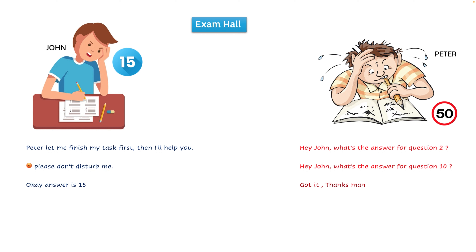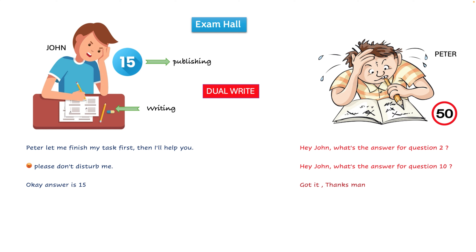Now let's figure out why the misunderstanding happened between John and Peter. John was doing two tasks: writing his own answer and helping Peter. This situation can be considered a dual write problem. While John was answering, he might have been analyzing something — hence he answered wrongly, or he answered correctly but Peter didn't listen carefully. Because of this, the data or answer is not consistent between these two students.